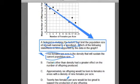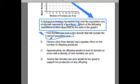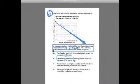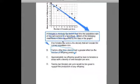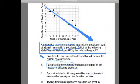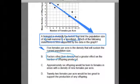Let's look at B. B says factors other than density had a greater effect on the number of offspring produced. Well, what other factors? What are these factors? Again, these other factors are not included in our data charts. We really can't make any statement based on them. We're just looking at what's in the chart itself, whatever's in the scatter plot.